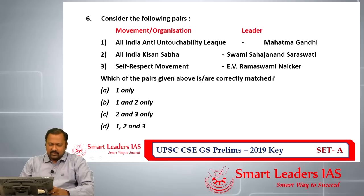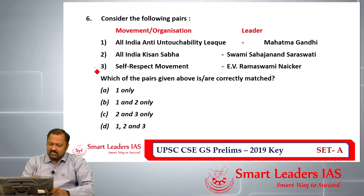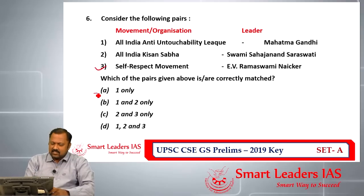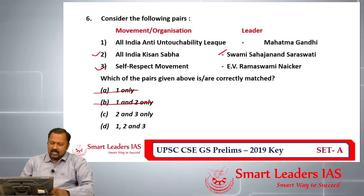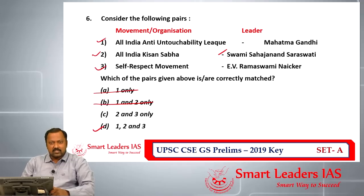Question number six asks about movements and organizations. The Self-Respect Movement is associated with E.V. Ramasami Naicker, so statement three is correct, eliminating options one and two only. The All India Kisan Sabha is also correct, and the first statement is correct as well. The All India Anti-Untouchability League was started by Mahatma Gandhi. So the answer for question number six is D.